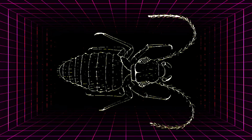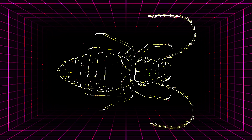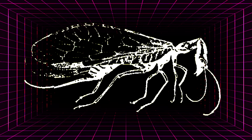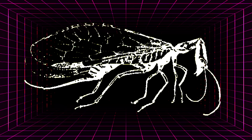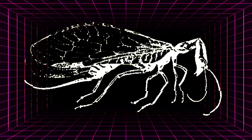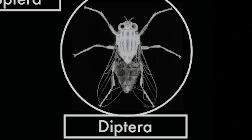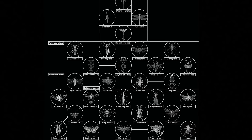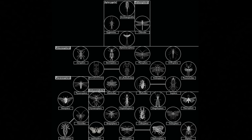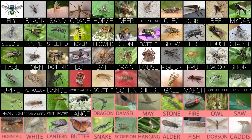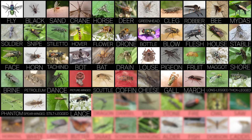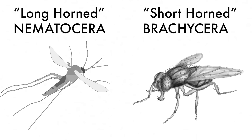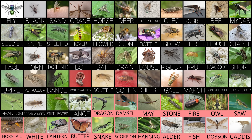In the English language there are roughly 67 different insects that have the word 'fly' attached to their name. This video will briefly go over every single one sequentially, and there will be a big distinction between the true flies — that is the order Diptera — and every other insect called fly but is not a true fly. The true flies can be further separated into two groups: the long-horned and short-horned flies, that is the Nematocera and the Brachycera.